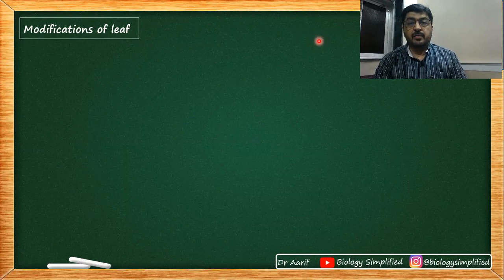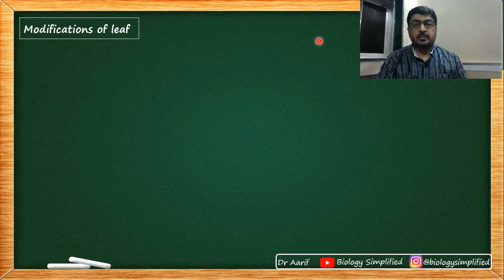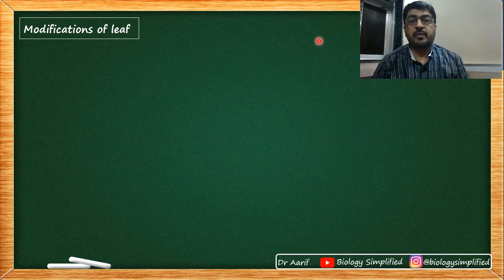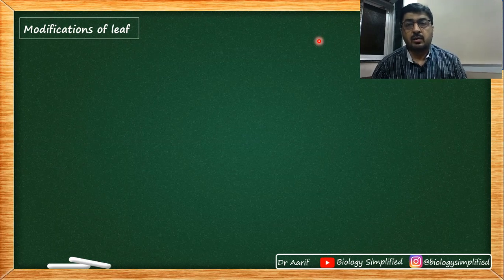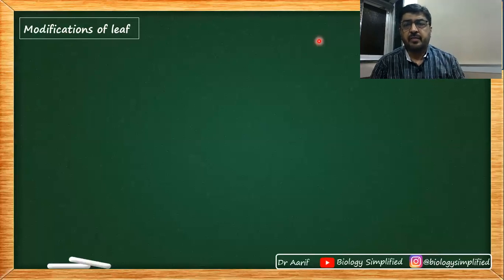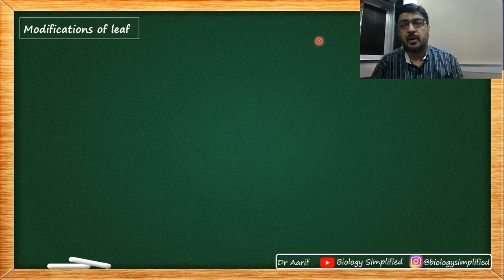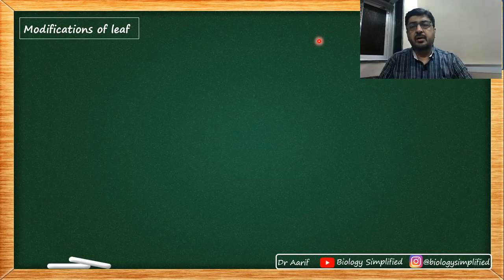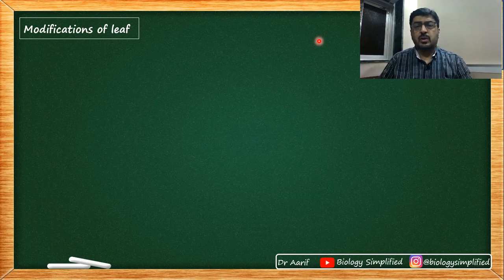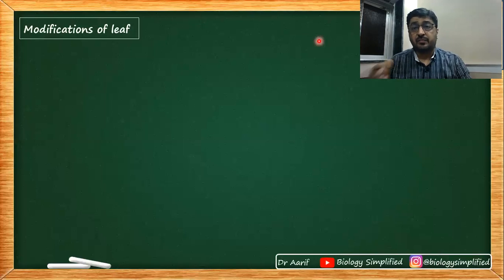Welcome back for the third and final session on leaf. In this last part we will talk about modifications of leaf. I've already made two earlier videos on leaf — this is the third one. I've divided the discussion into different videos so you get an idea of how to structure your study, taking it up part by part. Now we talk about modifications. We've spoken about modifications of root earlier, and modifications of stem last time — in fact 15 stem modifications. Here we talk about leaf modifications.